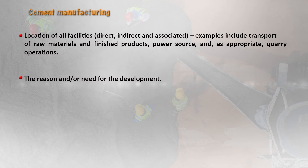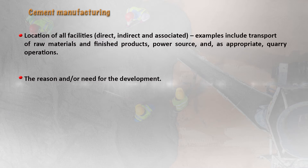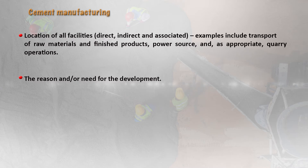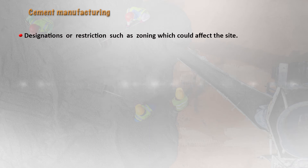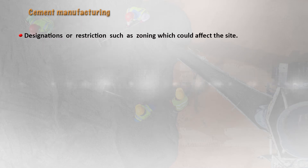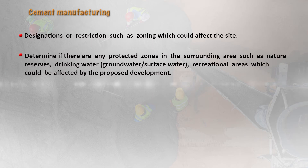One important thing is the reason and the need for the development — why this project has to come to that location and what is the need for its development. Also important is the employment opportunities it can generate for the residents and the population there. Then there are designations or restrictions such as zoning which can affect the site, and whether any specific zoning has to be carried out, and whether there are any protected zones in the surrounding area.